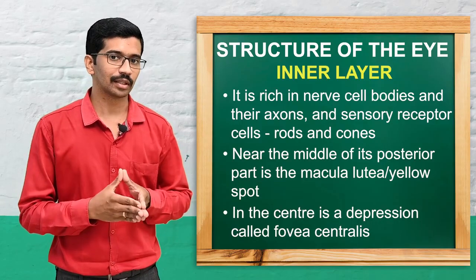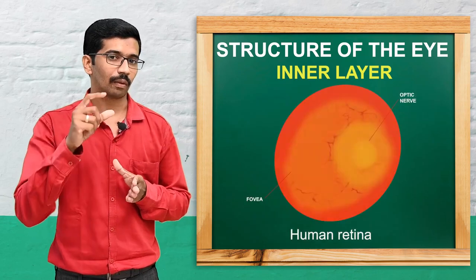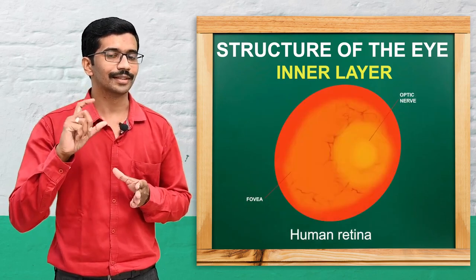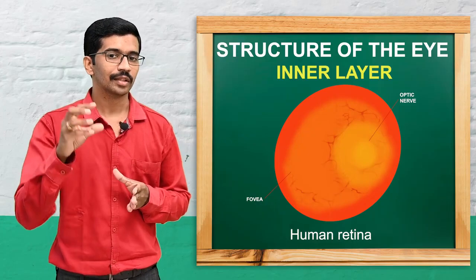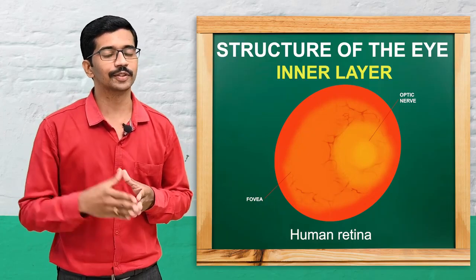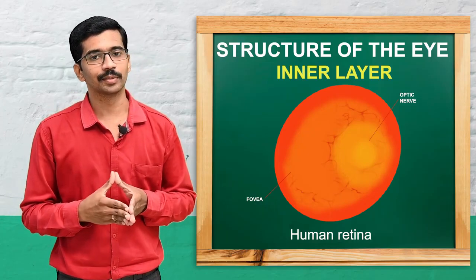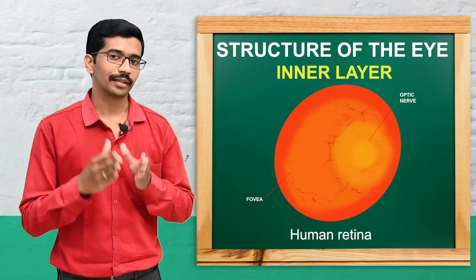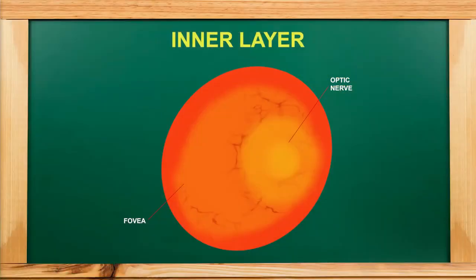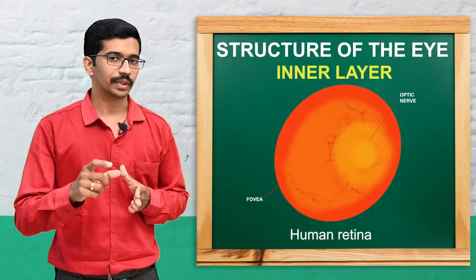At the back of the eyeball, all the nerve cells seen in the retina converge and leave the eyeball as the optic nerve. The area at the posterior side of the eyeball where the optic nerve leaves has no receptor cells present, and that area is termed the blind spot or optic disc.